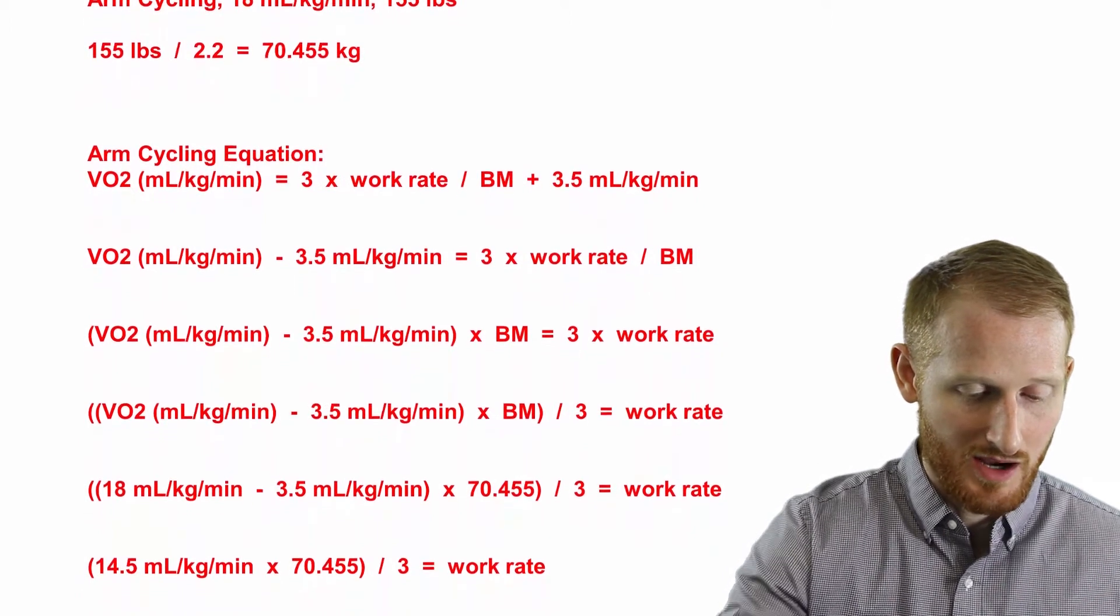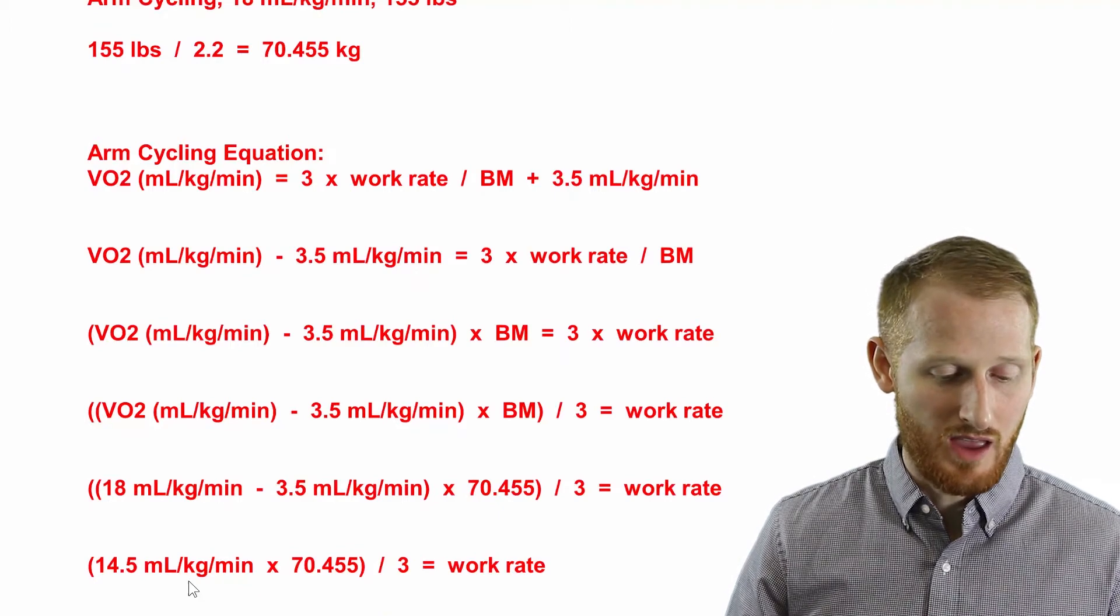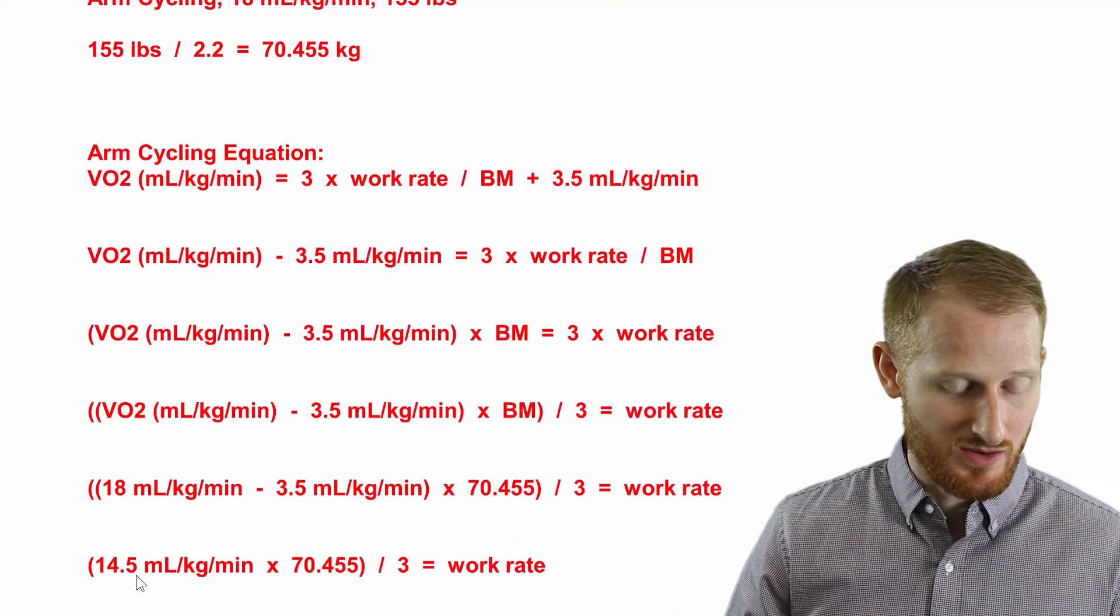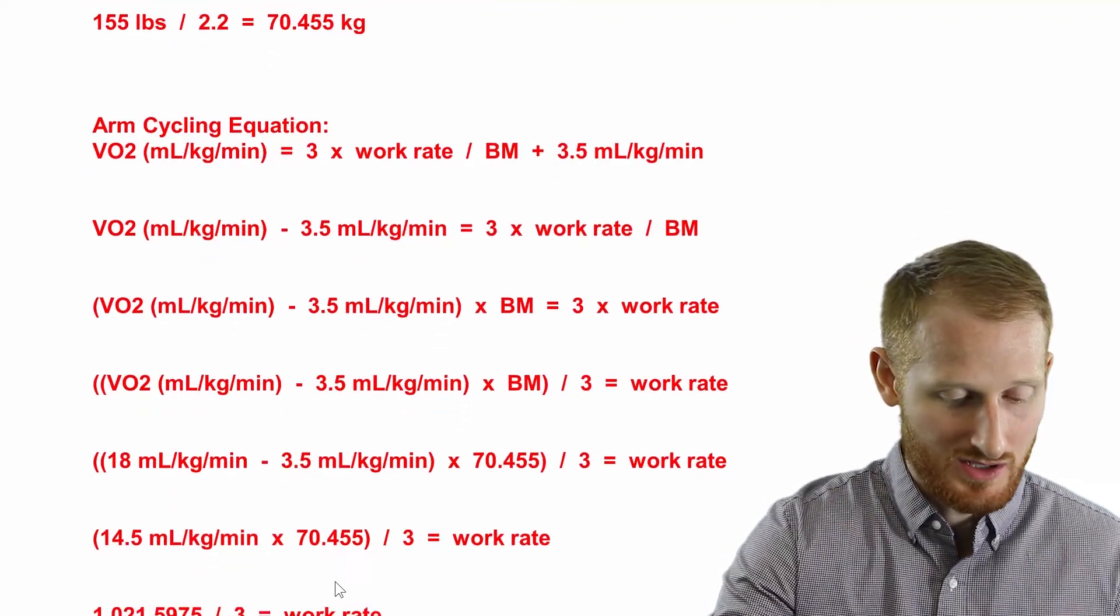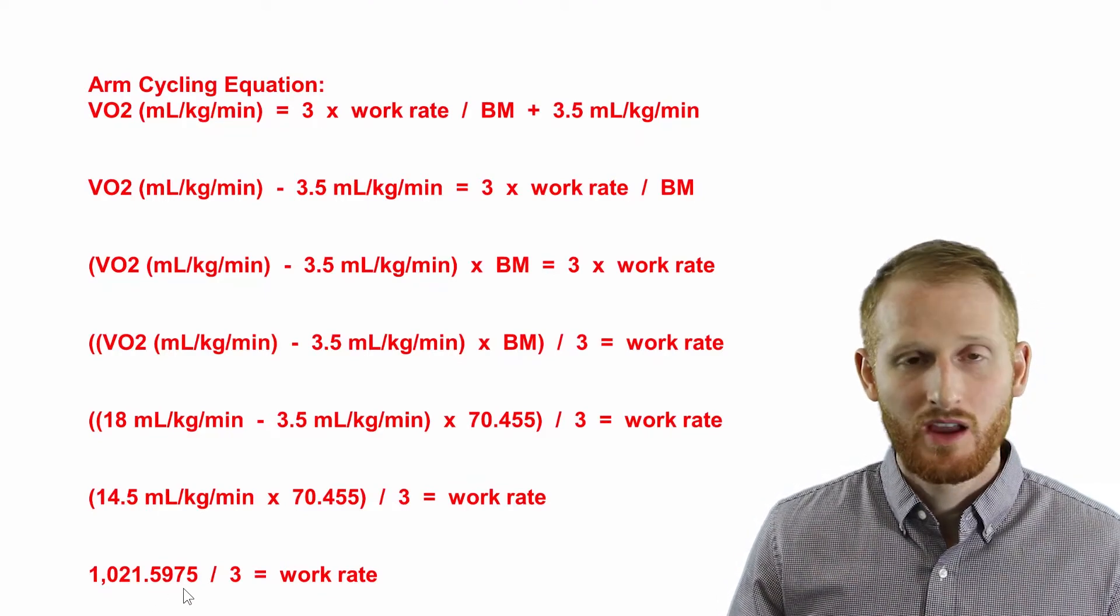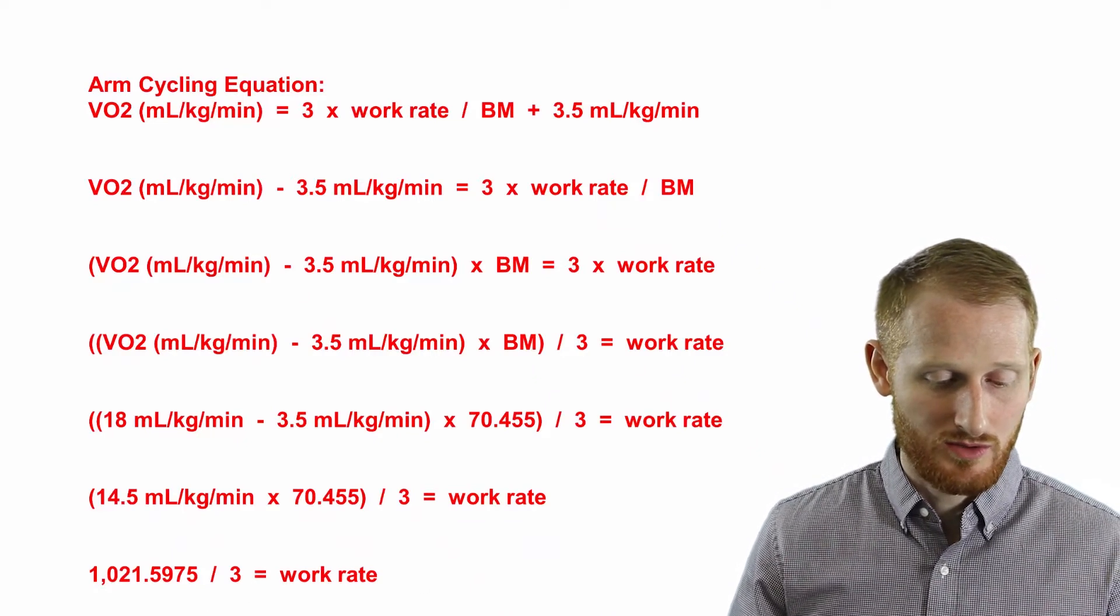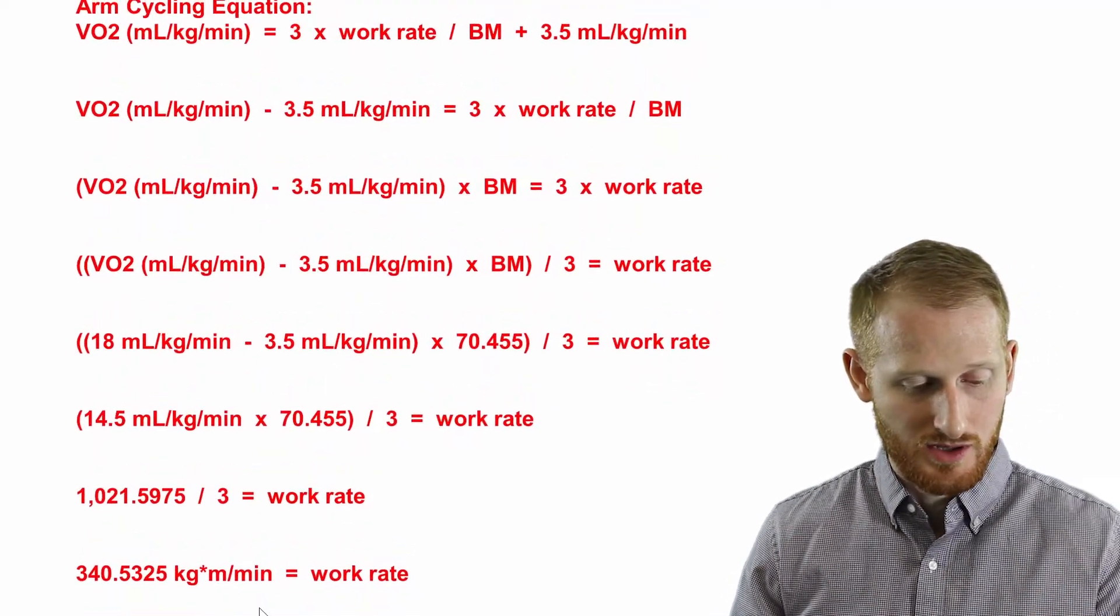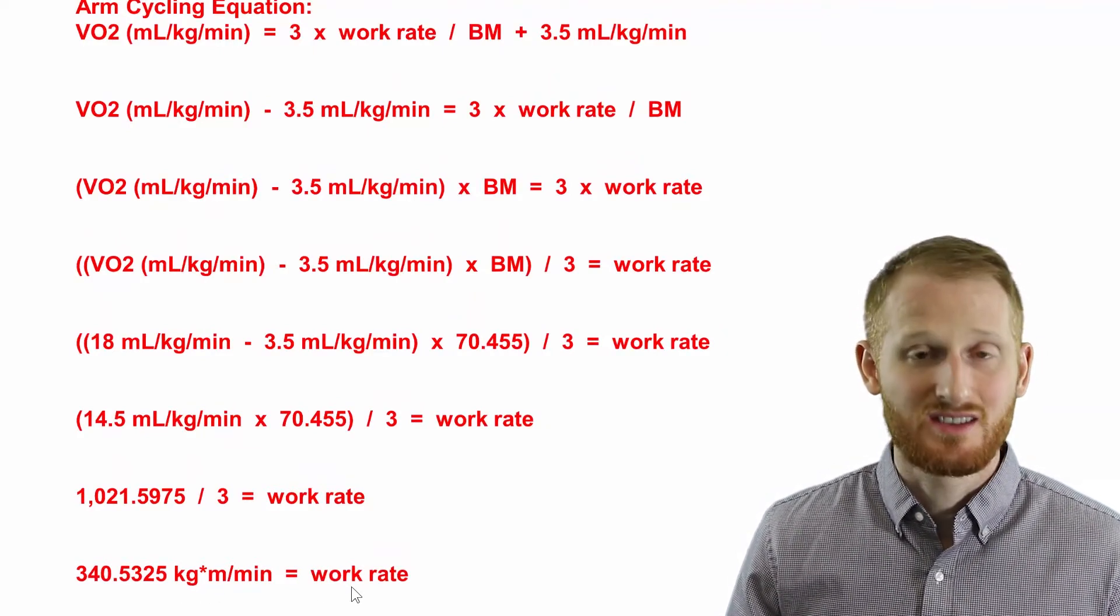So let's start with the 18 minus 3.5. That's going to give us 14.5 mLs per kg per minute. Next step is going to be multiplying this by the body mass. So 14.5 multiplied by 70.455 is going to give us 1021.5975. And then the last step here is going to be dividing this by 3 in order to get the actual work rate. And so doing so gives us 340.5325 kgm per minute as the work rate.